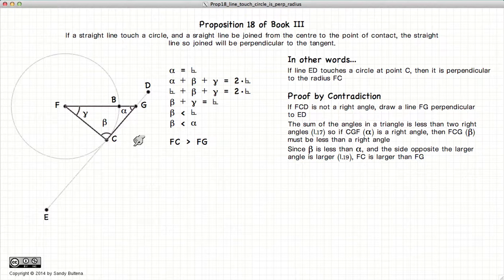According to Proposition 19 of Book 1, the larger side of a triangle is opposite the larger angle. So if alpha is larger than beta, FC will be larger than FG.